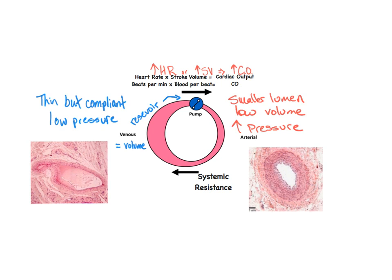This venous side is a large reservoir for volume and is under significantly less pressure than its arterial partner. This large venous reservoir can be used as a primer for the pump or heart to increase the stroke volume when the body senses the need for an increased cardiac output.